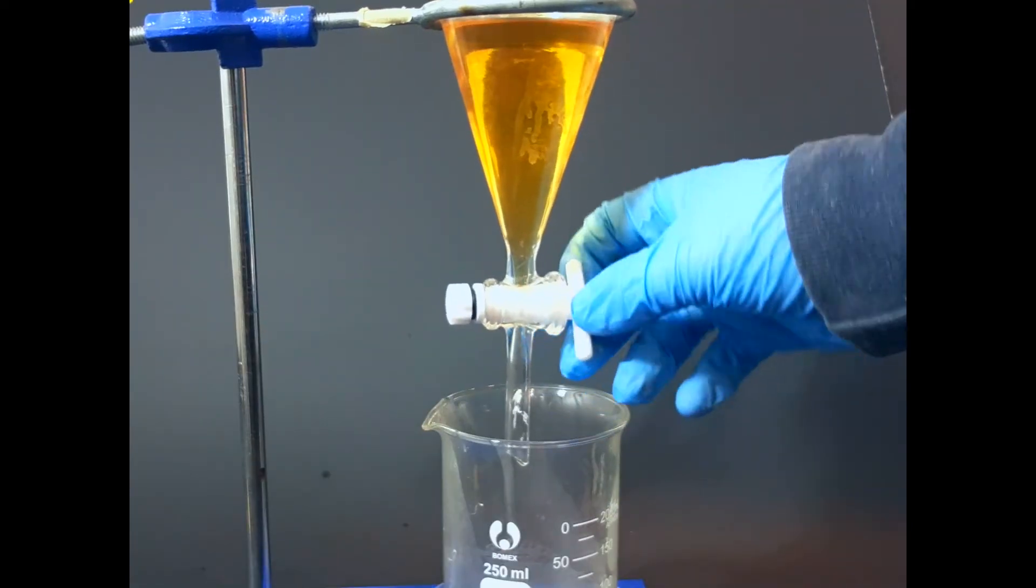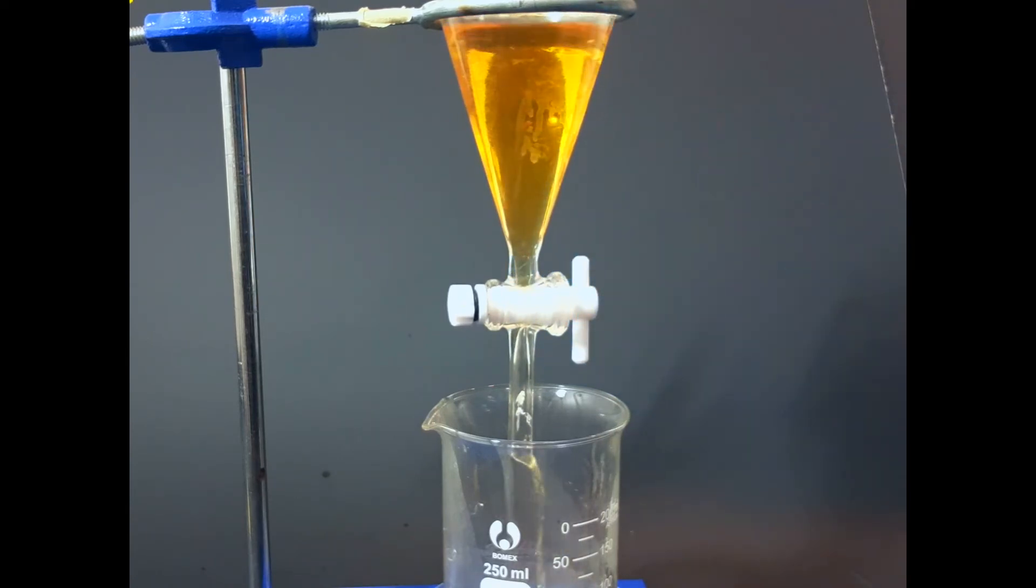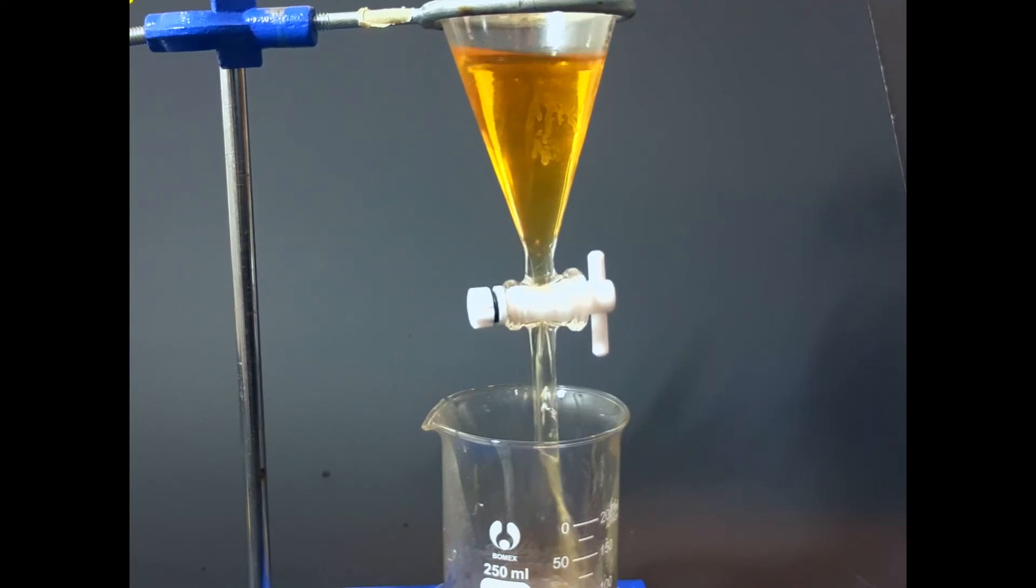As you can see, my solution is still colored and it normally would be a very light yellow. But again, because I'm using soluble coffee, some of the theobromine is not going to be dissolved. Now I pour everything into a beaker down below.